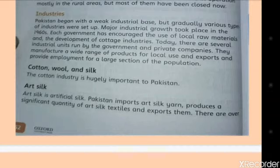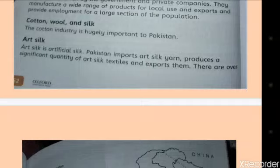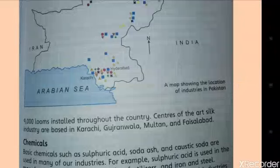The cotton industry is very important to Pakistan. Art silk is artificial silk — Pakistan imports art silk yarn, produces a significant quantity of art silk textiles and exports them. There are over 9,000 looms installed throughout the country. Centres of the art silk industry are based in Karachi, Gujranwala, Multan and Faisalabad.